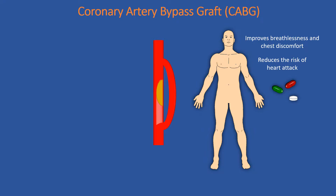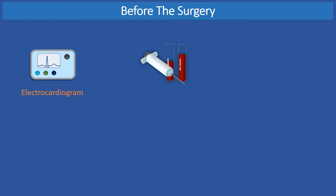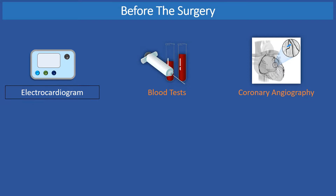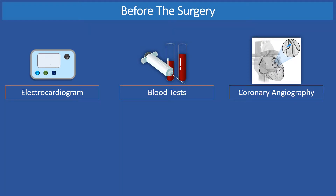Taking medication and angioplasty may also help improve heart blood flow, and sometimes a combination of treatments is needed. Before bypass surgery, different tests are carried out, often including an electrocardiogram, blood tests, and a coronary angiography. These tests enable the doctor to assess the presence of heart diseases and the exact location of the coronary artery narrowing.